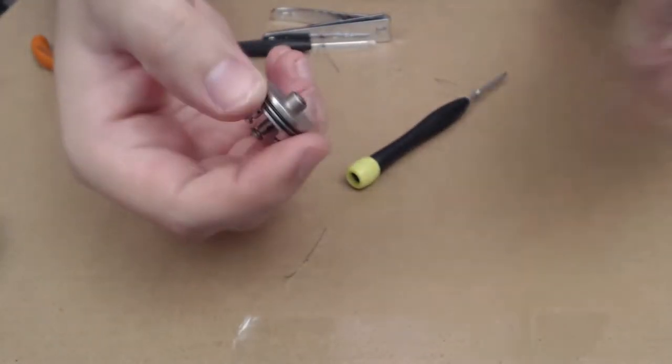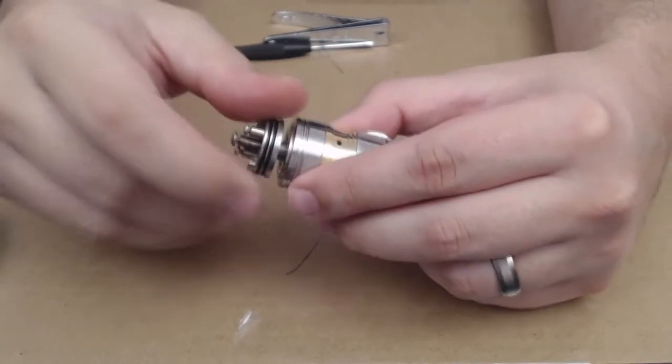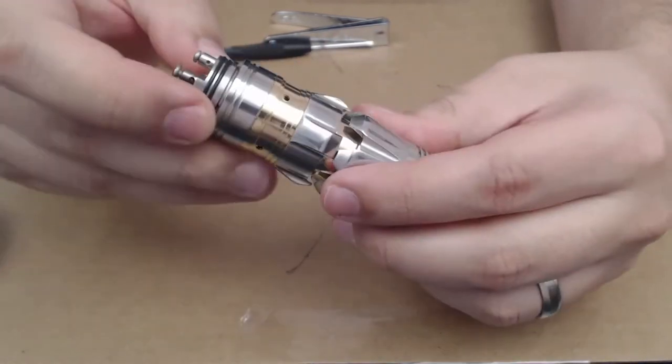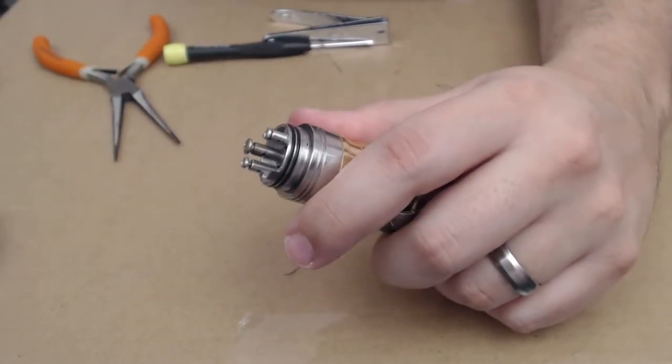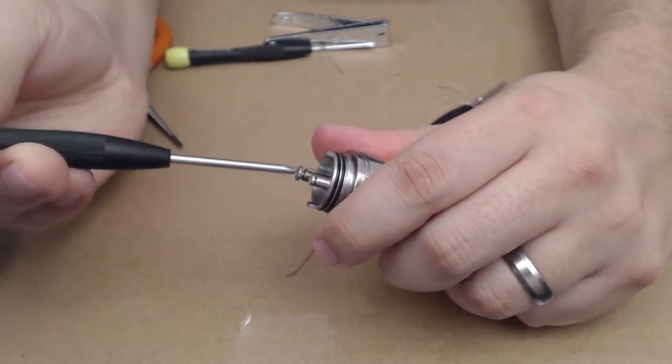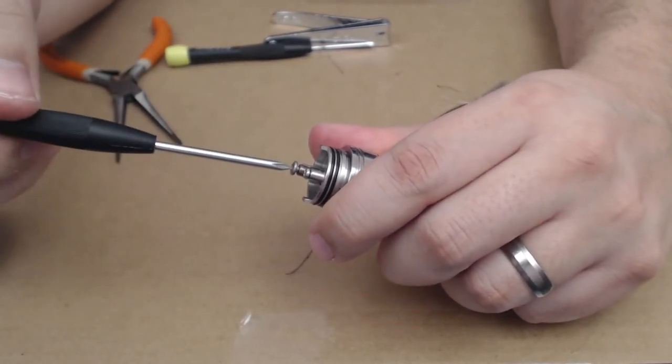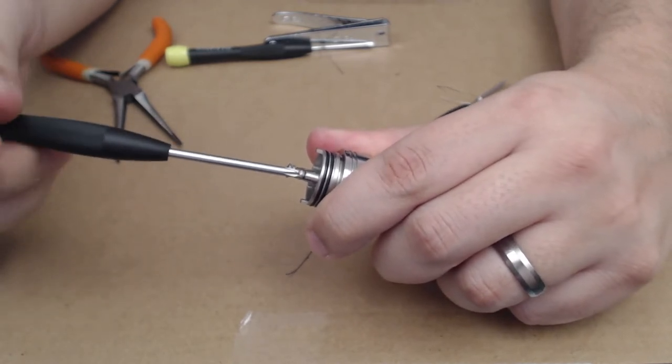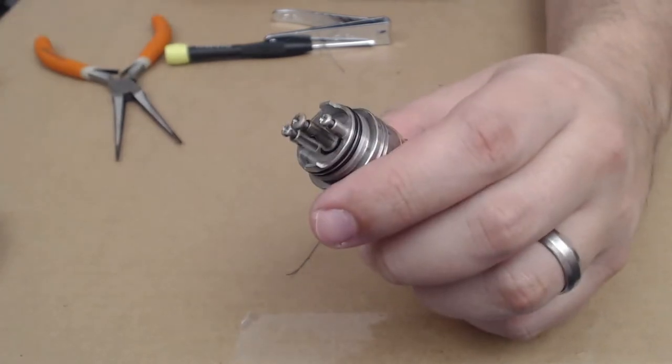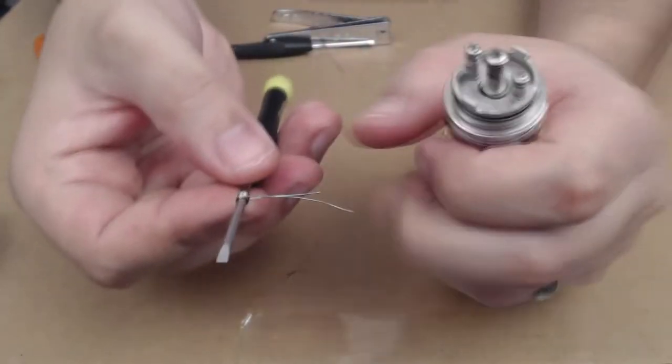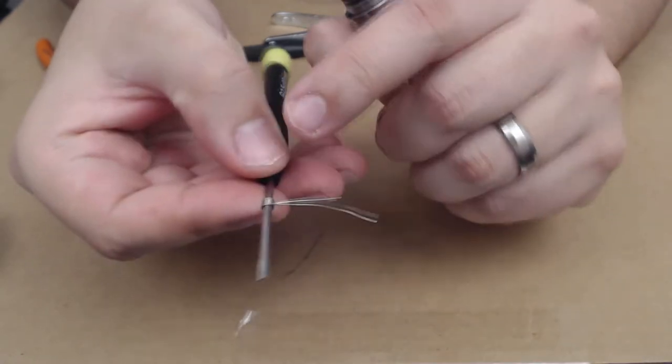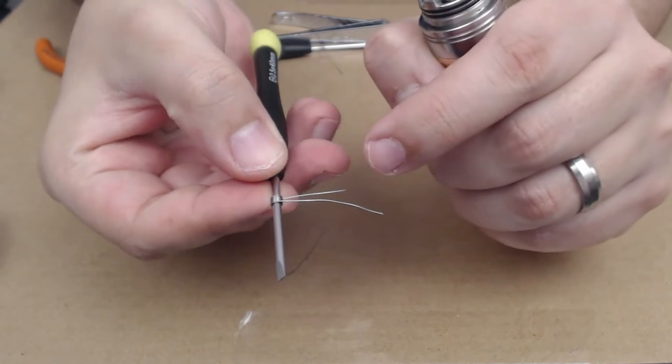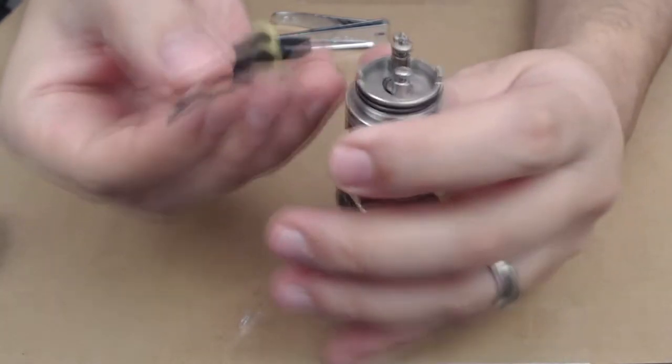Alright, so then you have your RDA on a mod. Definitely do not recommend having a battery in your mod. And if you do, make sure you have it locked down here. That way you're building a lot safer - no battery, no chance of it firing while you're building. Definitely want to do that. So you have your mod. You take your coil, and what I do, the one that's looping over is the one I put on my center post, the one under is the one I put on my negative post.